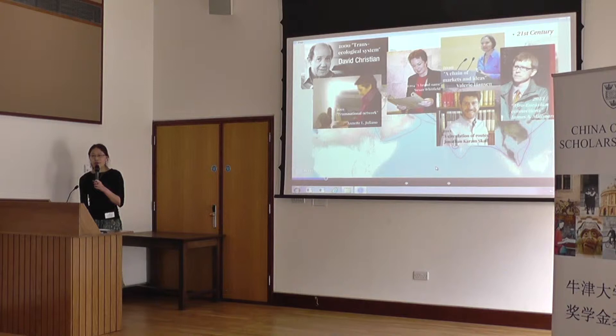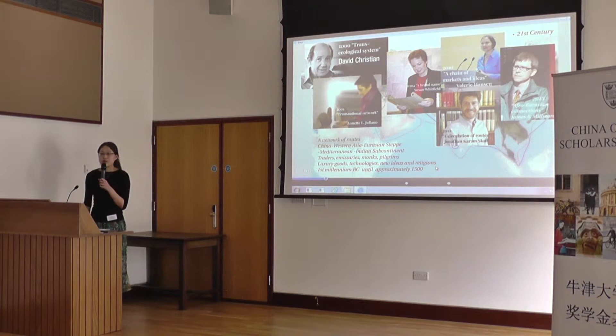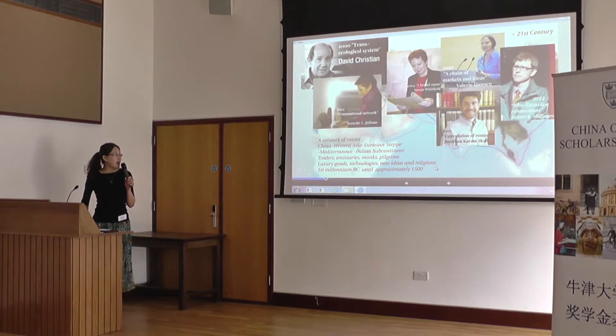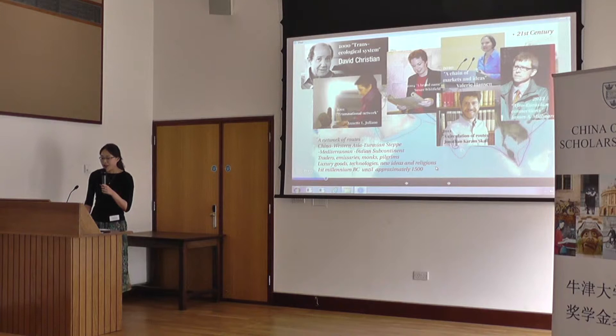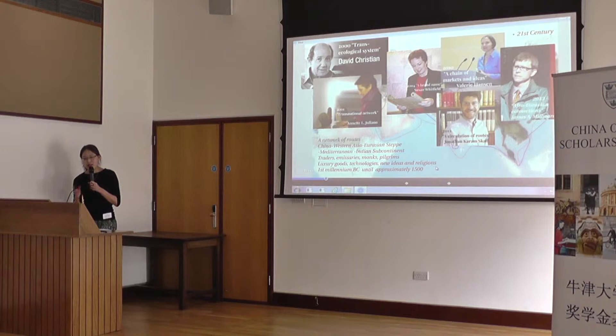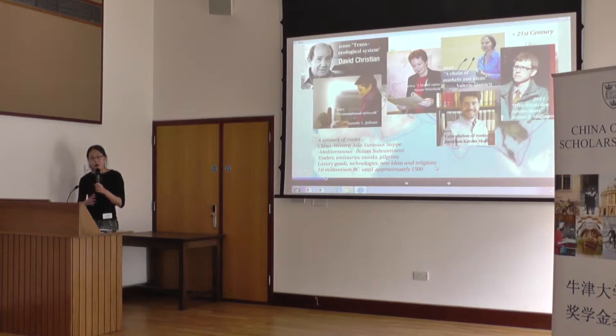Referring to all the varied perspectives and research done since the 21st century, I put the definition of the Silk Road as follows: the Silk Road was a network of routes in the ancient world that connected China with Western Asia, the Eurasian steppe, the Mediterranean, and the Indian subcontinent, along which traveled traders, merchants, monks, and pilgrims. They brought different kinds of luxury goods, technologies, new ideas, and new religions. It spanned from approximately the first millennium BC until around 1500 AD with the arrival of European ships into the Indian Ocean, though scholars' opinions on the definite start and decline still vary.